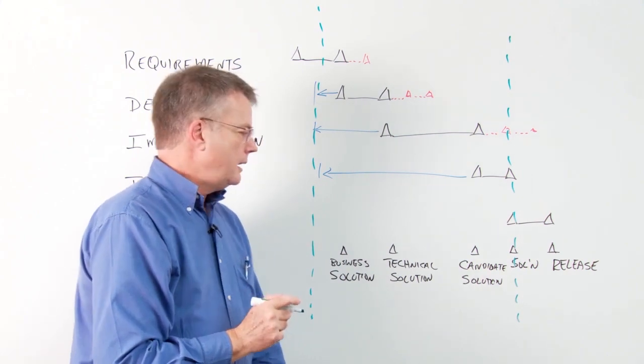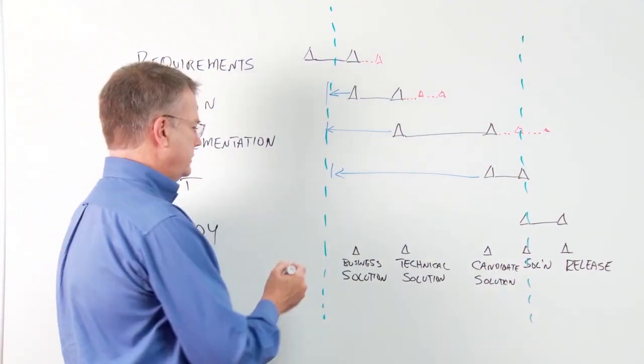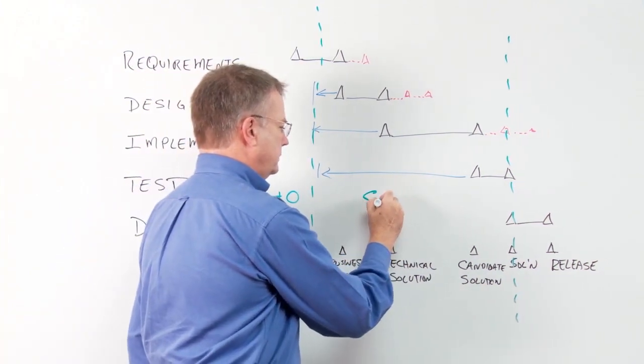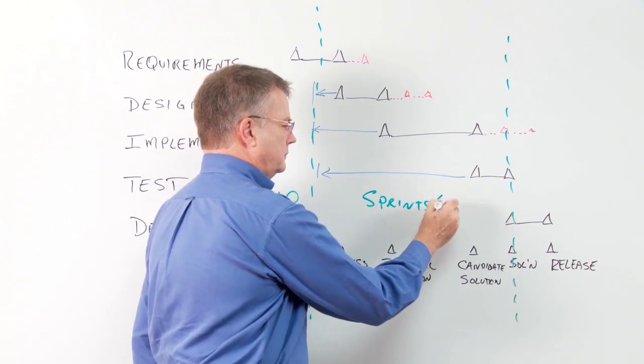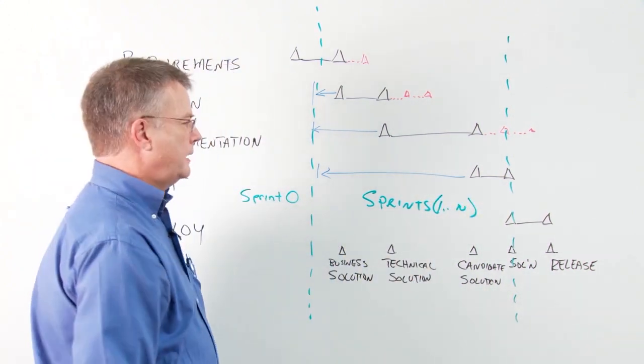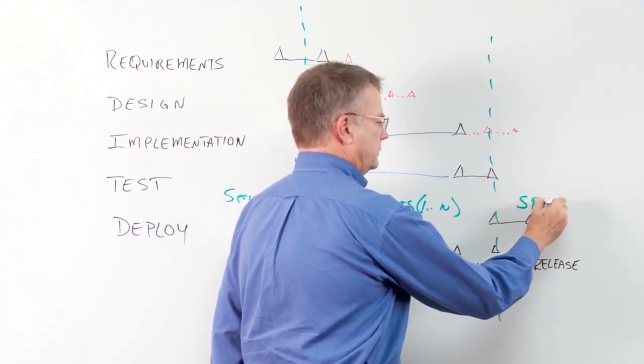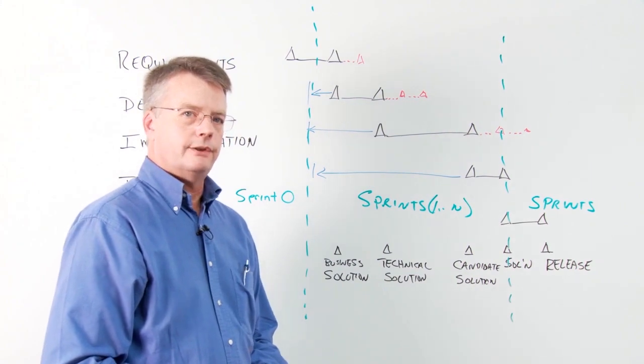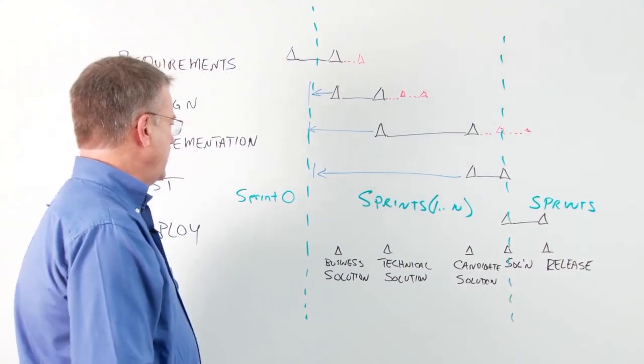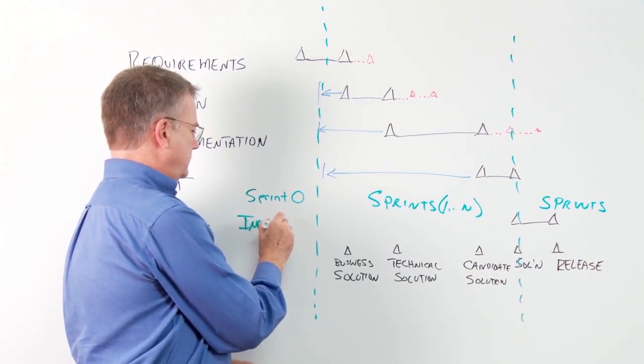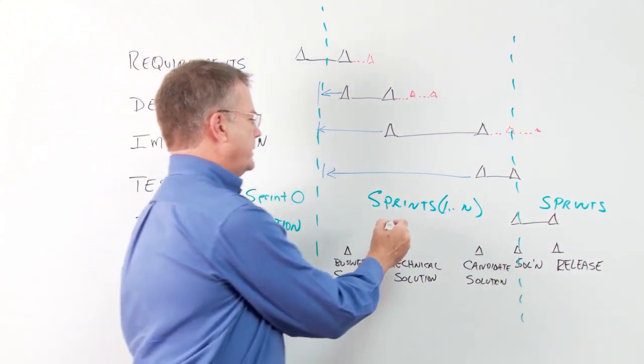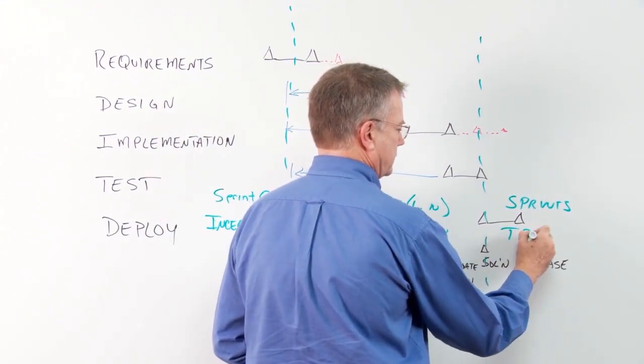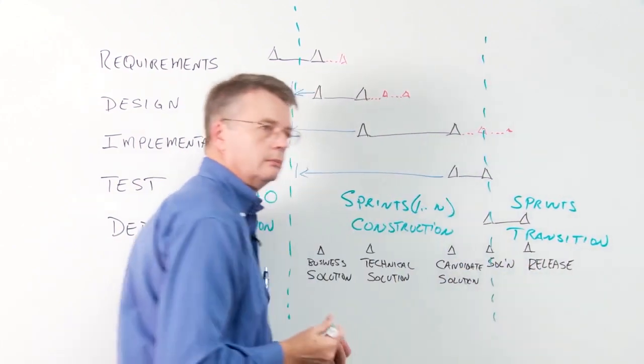So in Scrum, for instance, this is sprint zero. And these are sprints. Some number of them. And then we move into more sprints if we need them for the activities after we've finished our solution, but before the release is actually in the hands of the users. If you were to look at the disciplined agile delivery approach, then this would be known as inception. This would be known as construction. And finally, transition as the three phases.